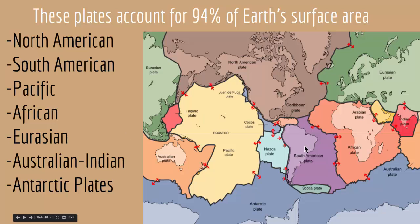For example, South America is on the South American plate; North America — the United States and Canada — is on the North American plate; Australia is on the Australian plate; and Europe and Asia are on the Eurasian plate. When these plates move, the continents also move because the continents are attached to the plates. This is why we have continental drift.